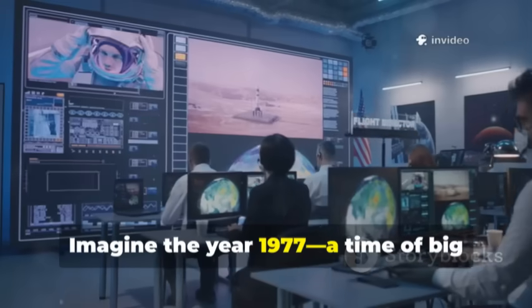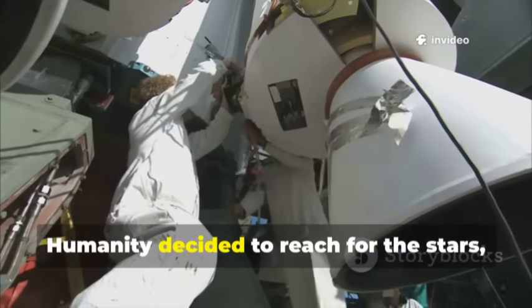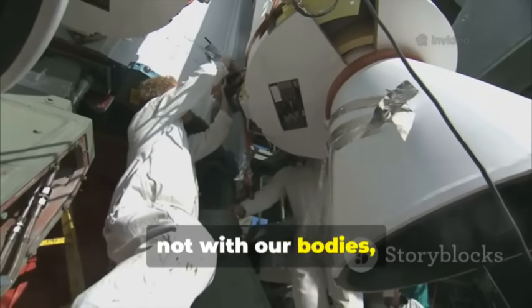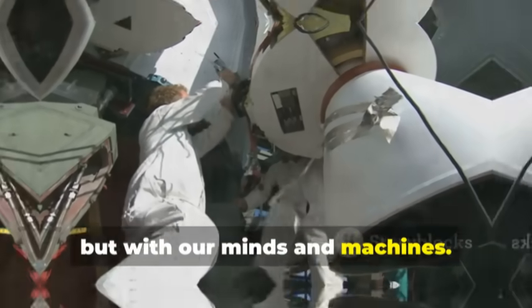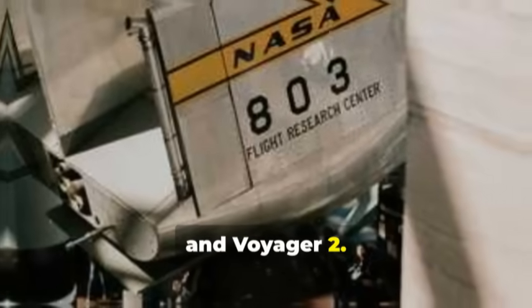Imagine the year 1977, a time of big dreams and bold ambition. Humanity decided to reach for the stars, not with our bodies but with our minds and machines. We built two robotic explorers, Voyager 1 and Voyager 2.